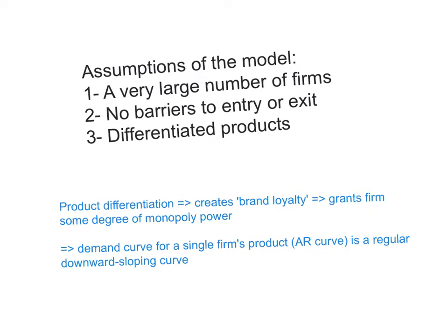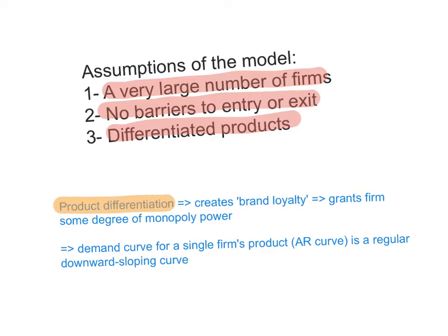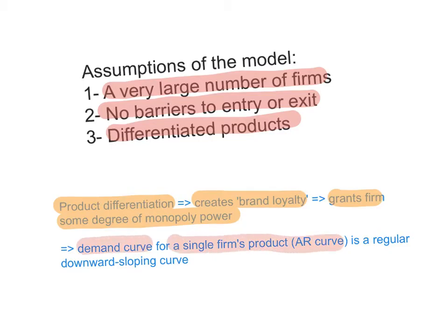The assumptions of the model are: there's a very large number of firms; there are no barriers to entry or exit, so firms are free to enter or exit the market; and these firms are producing differentiated products — not homogenous or identical products. Product differentiation is a very important assumption because it creates brand loyalty. Consumers become more loyal to certain brands, which grants the firm some degree of monopoly power. For this reason, the demand curve that each firm in monopolistic competition faces is a regular downward sloping demand curve — not like perfect competition where the demand curve each firm faces is a horizontal straight line.